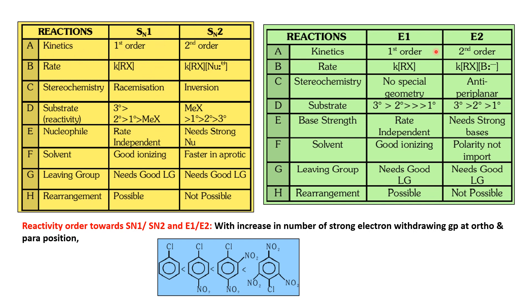Comparing SN1, SN2, E1, and E2: SN1 is first-order kinetics; SN2 is second-order kinetics. For SN2, the rate depends on both the alkyl halide and the nucleophile. Stereochemistry: SN1 gives a racemic product; SN2 gives inversion of configuration. Substrate reactivity for SN1 is tertiary > secondary > primary > methyl, while for SN2 it is the reverse. SN2 requires a strong nucleophile.